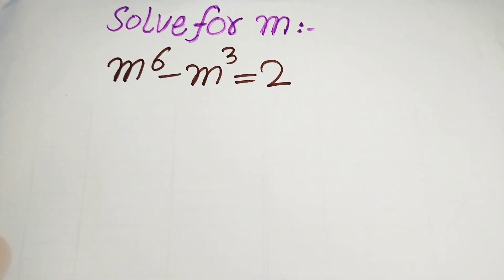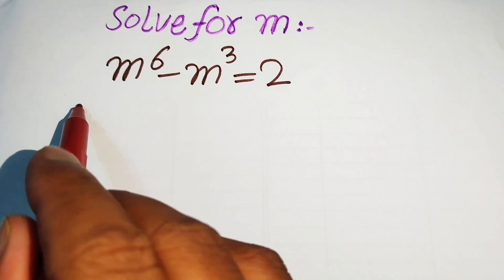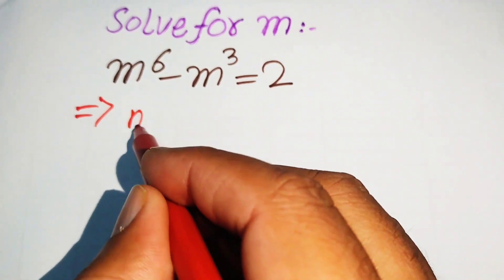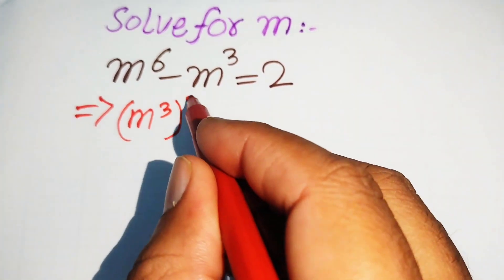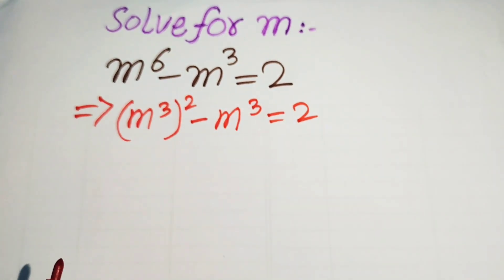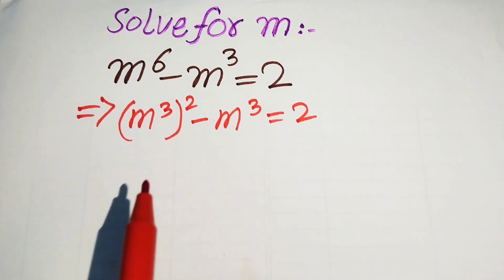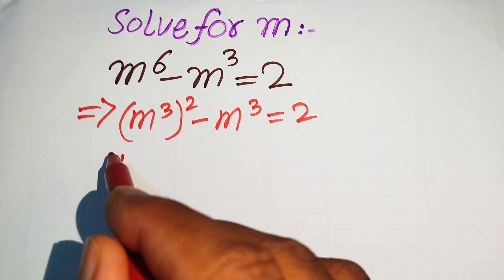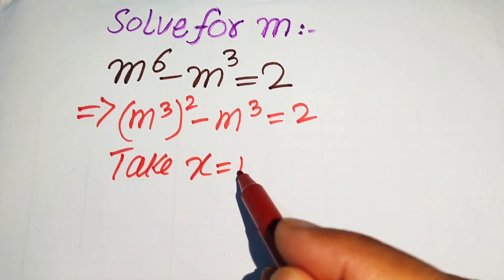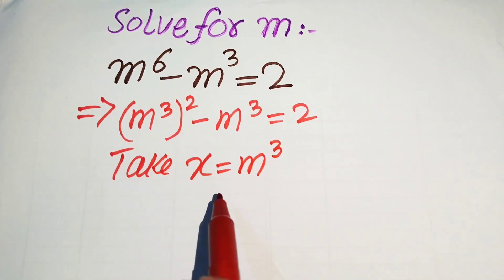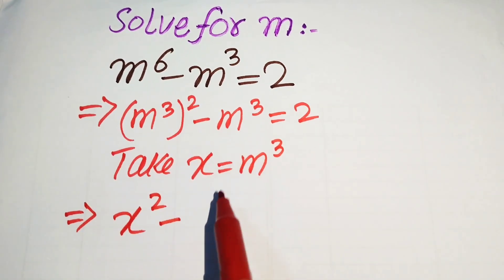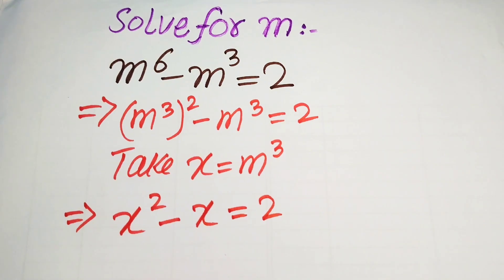The very first step we are going to do is rewrite this equation in a new form. We have m to the power of 6 written as m cubed whole squared, minus m cubed equals to 2. Both terms are now expressed in m cubed, so we take m cubed equals to x. This expression is then written as x squared minus x equals to 2.